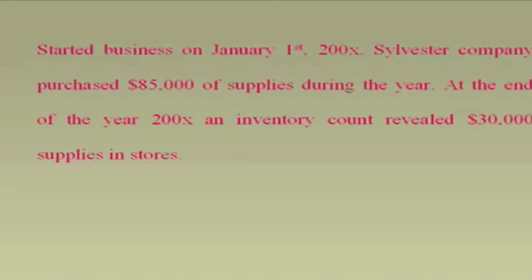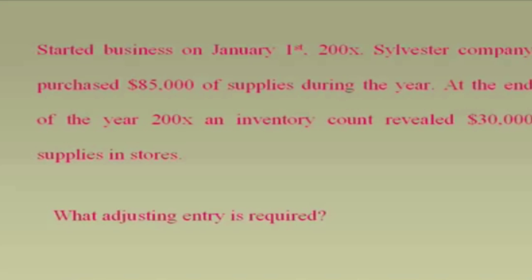Let's do the first one. Sylvester Company purchased $85,000 of supplies inventory during the year. At the end of the year, an inventory count revealed $30,000. You have to do an adjusting entry because you don't have $85,000 anymore. When you find $30,000 left over, that means $55,000 has been used up. So supplies has to go down by $55,000. Supplies is an asset; when it gets used up, it gets converted to an expense. What adjusting entry is required?